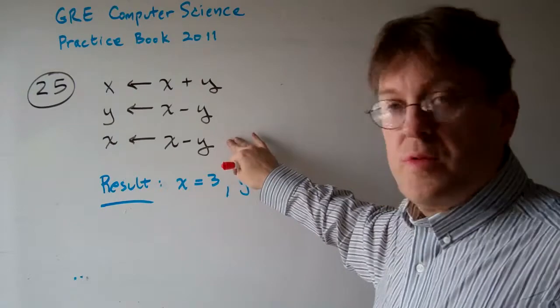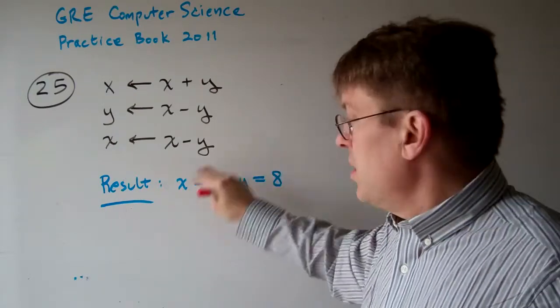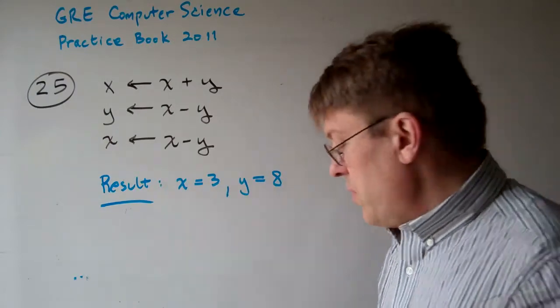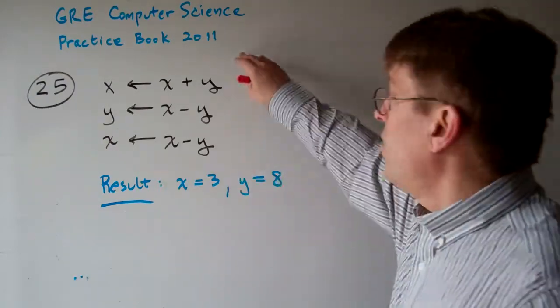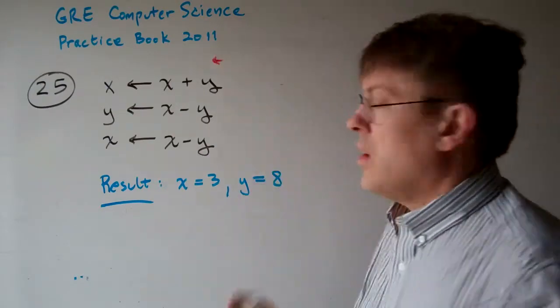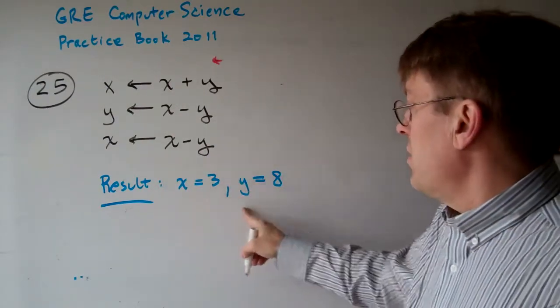The pseudocode goes through these steps and we get a result post-condition where x equals 3 and y equals 8. Let's see what would have to happen. What would x and y have to be up here for us to get this result?